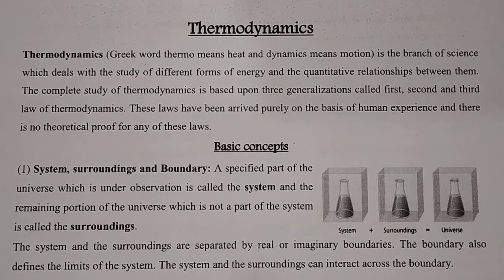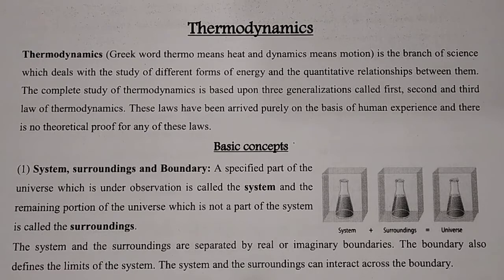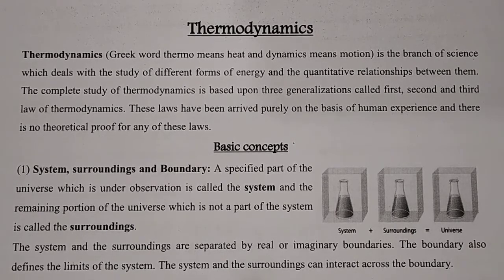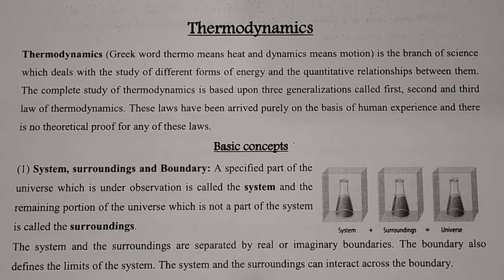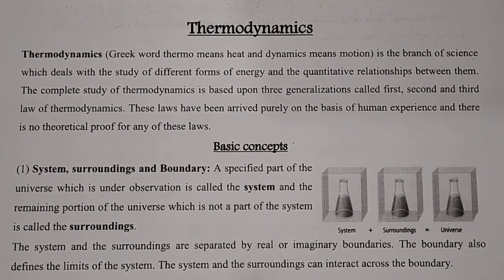The complete study of thermodynamics is based upon three generalized laws called the first, second, and third law of thermodynamics. After the third law, one more law was introduced — the zeroth law of thermodynamics. These laws have been arrived at purely on the basis of human experience and experiment, and there is no theoretical proof for any of these laws. Thermodynamics is directly or indirectly related to physics as well, since we deal with machines and their applications.